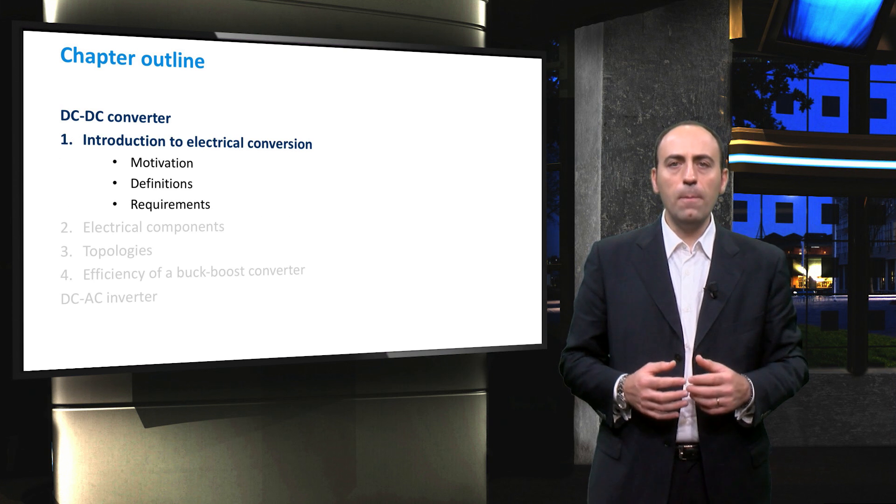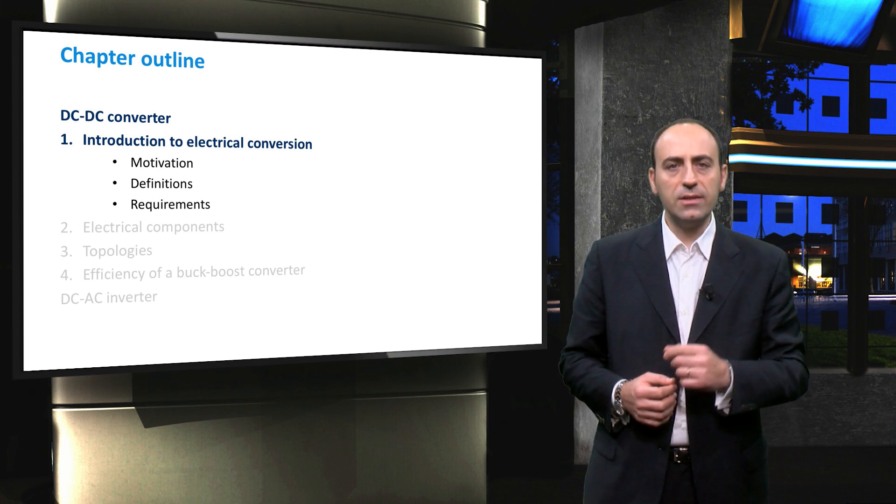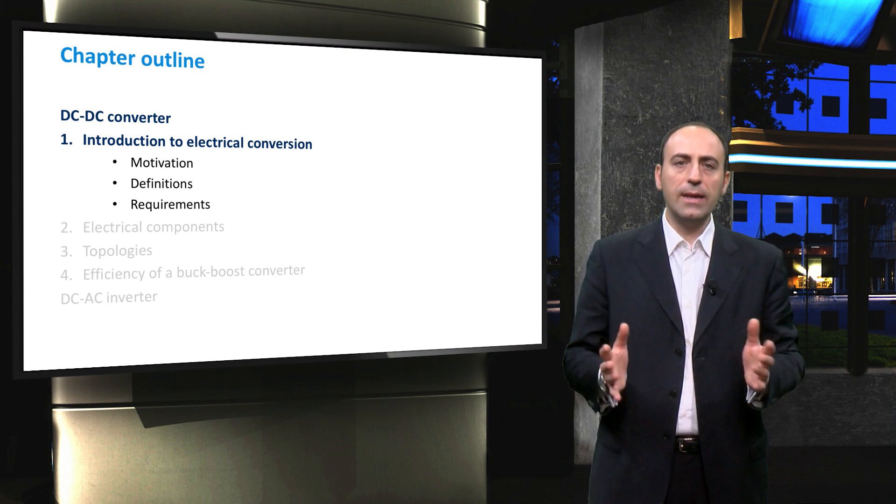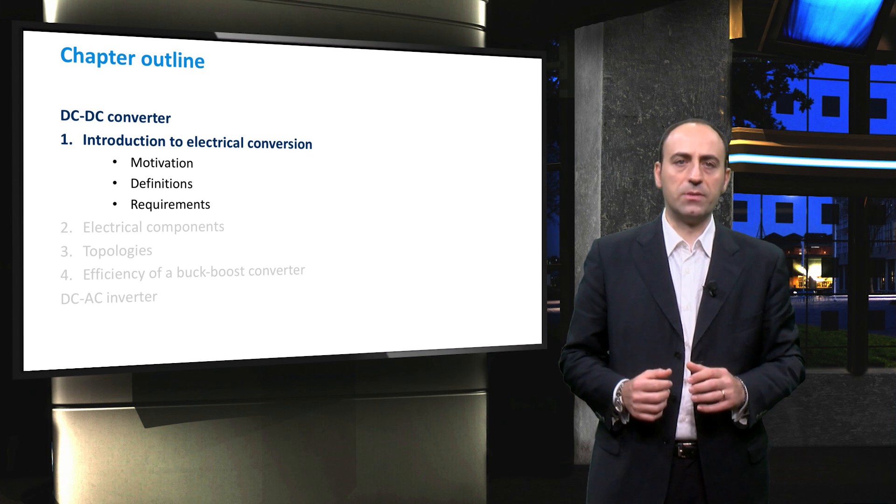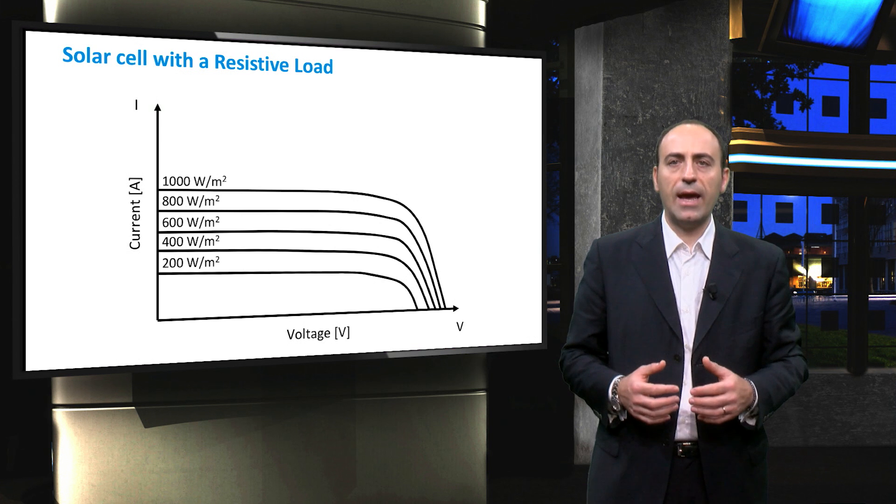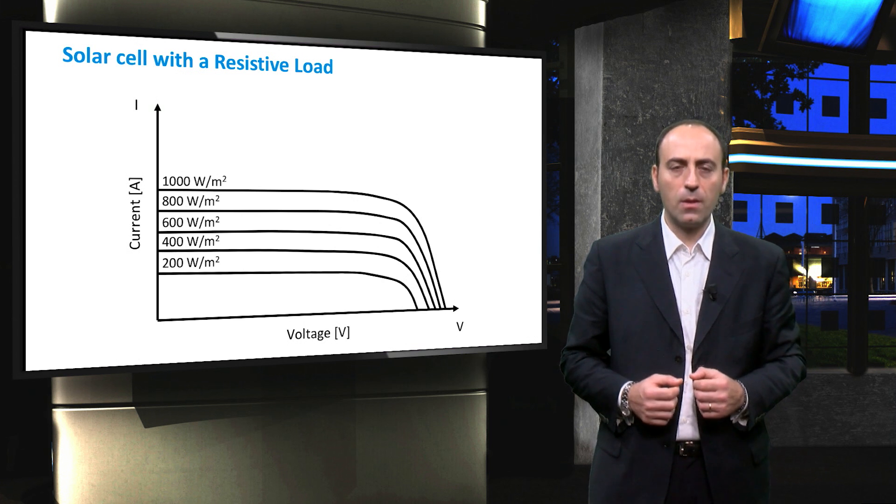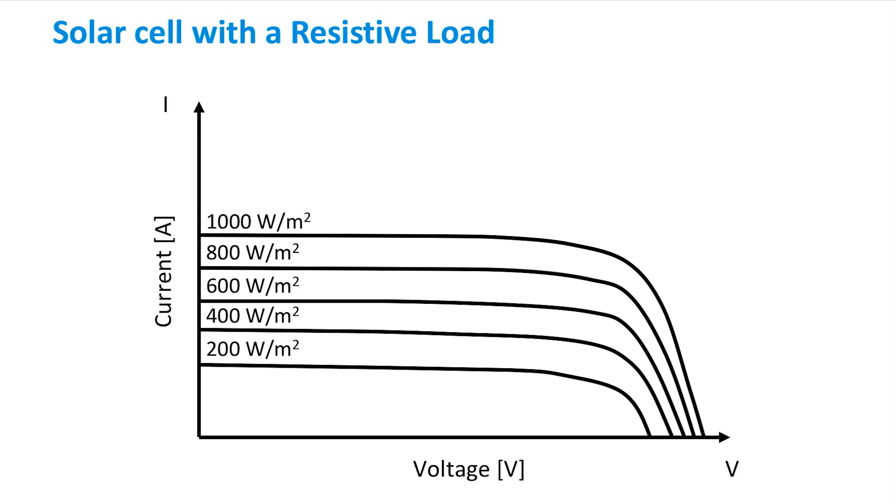In this video, we shall explain the importance of a converter, give you its definition and then its requirements. Let's start with some basic concepts. A PV module is a voltage-driven current source and its IV characteristics depend on environment conditions, such as the irradiance falling on the module. For each of these curves, we can identify the maximum power point.